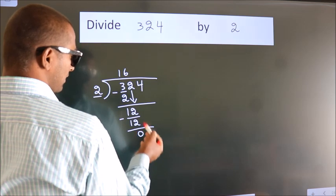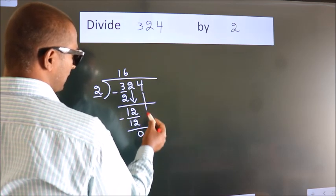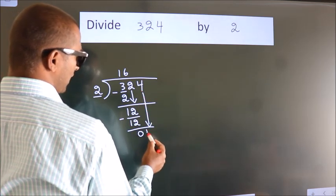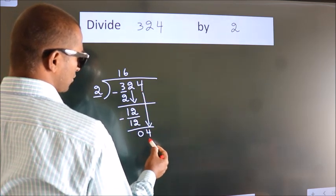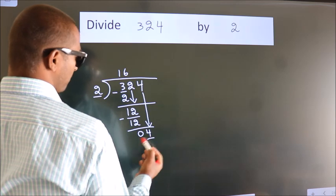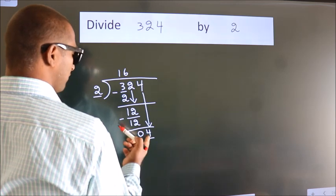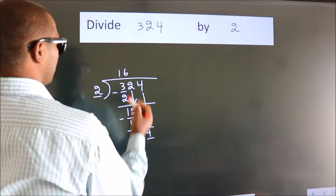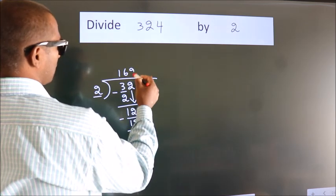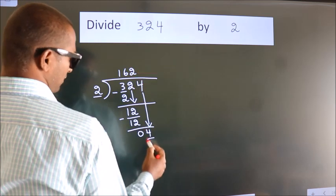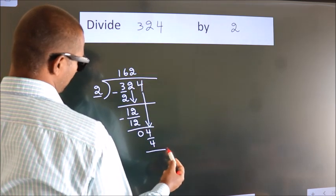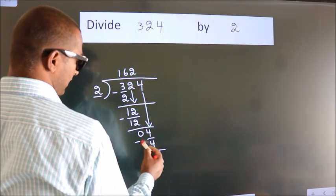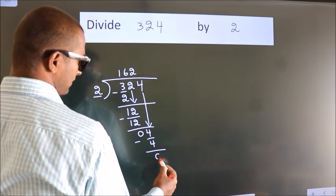After this, bring down the beside number, so 4 comes down. So we have 4. When do we get 4 in the 2 times table? 2 times 2 is 4. Now we subtract. We get 0.